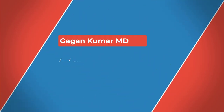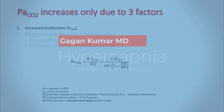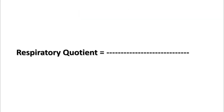Hello everyone. Today we'll continue to talk about hypercapnia and we'll start talking about different etiologies that would result in hypercapnia. The first is increased production. As we talked about in previous lectures, this is one of the reasons why PaCO2 can increase, the other two being decreased ventilation and increased dead space ventilation.